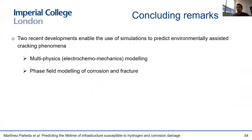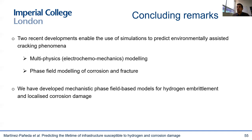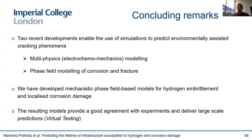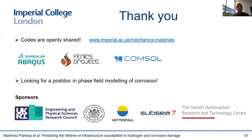To conclude: there is an opportunity to bring computer simulations to the prediction of environmental assisted cracking phenomena such as stress corrosion cracking, hydrogen embrittlement, and corrosion fatigue, mainly because of two recent developments — the possibility of modeling coupled physical phenomena and the surge in phase field methods to track evolving interfaces such as corrosion pits or cracks. We have shown for hydrogen embrittlement and localized corrosion that these powerful computational tools can resolve the underlying physics and provide a mechanistic modeling framework. These models deliver very good agreement with experiments and can be used for virtual testing of civil engineering infrastructure exposed to harmful environments. Thank you very much for your attention and thanks to my sponsors, and many thanks to the organizers and RILEM for the opportunity to give this plenary talk and for the Gustavo Colonetti medal.